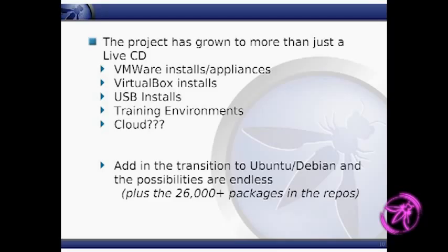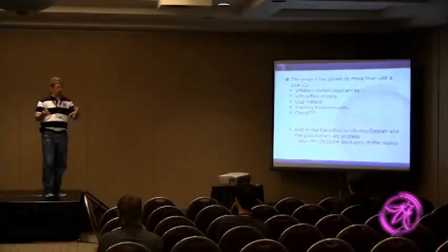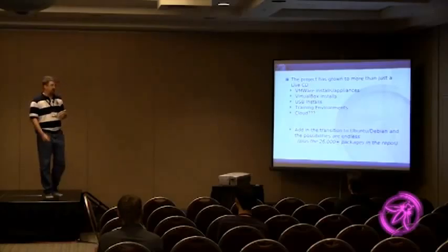I have VMware installs, VirtualBox installs. I created a USB install on an earlier version, but honestly it was so slow you wouldn't want to use it — I wouldn't give it to my enemies, let alone my friends. I've used it for many training environments, and we're going to talk about the cloud. Starting with the WTE release, I moved over to Debian or Ubuntu packages. If you take the tools I've done and the 26,000 packages that exist for Debian — like, what do you want? I was doing a class yesterday and needed a quick HTML editor, so I installed Bluefish with apt-get — there's your HTML editor, ready for a demo. It's really quite nice.